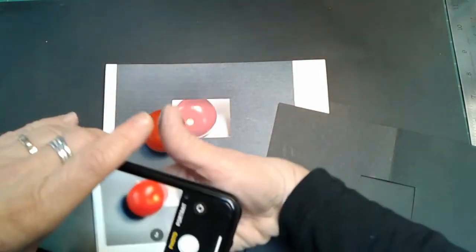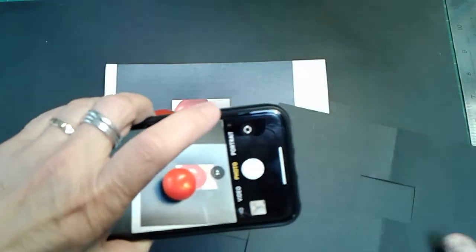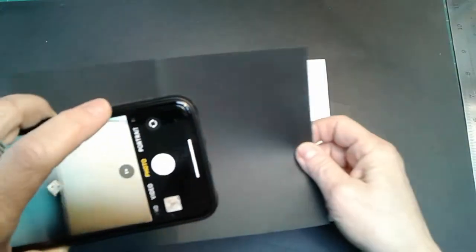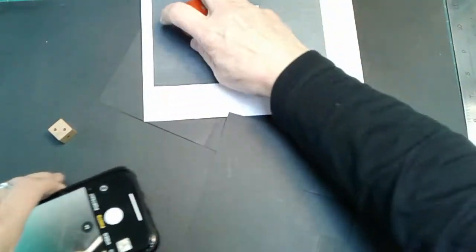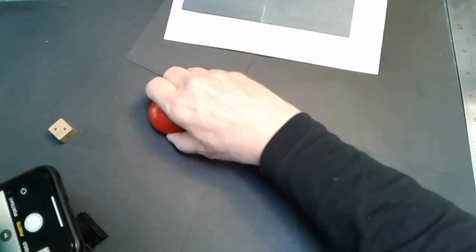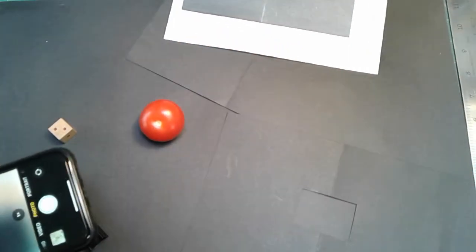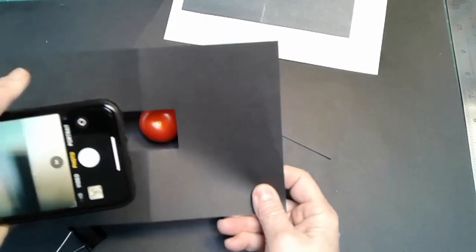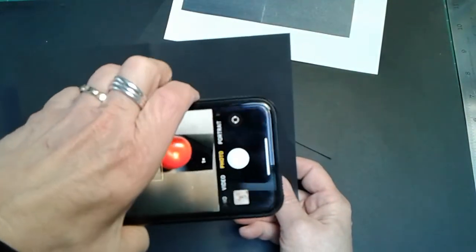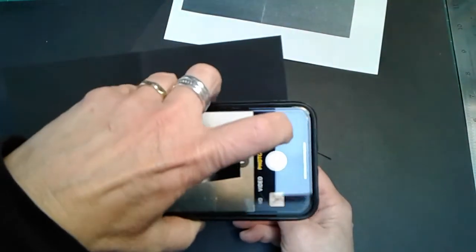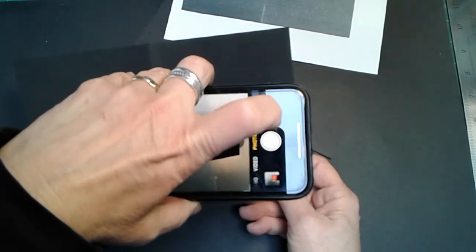And this is kind of tricky to do by yourself. I took my viewfinder. I held it. Whoops, let's get this out of the way. Okay, took my viewfinder, put it somewhere over this tomato, maybe like that. And I snapped a picture.